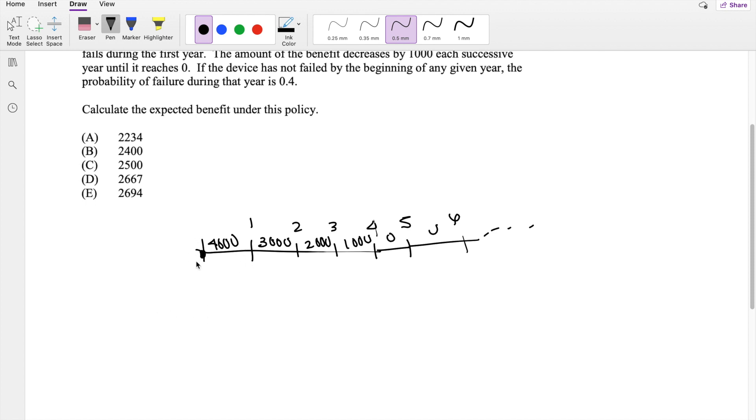So in the first year, it's kind of assumed that when you buy the product, it hasn't failed, right? So assuming that it hasn't failed when you bought the device, then this is equal to $4,000 times 0.4 because you only get the $4,000 if the device fails within this year.